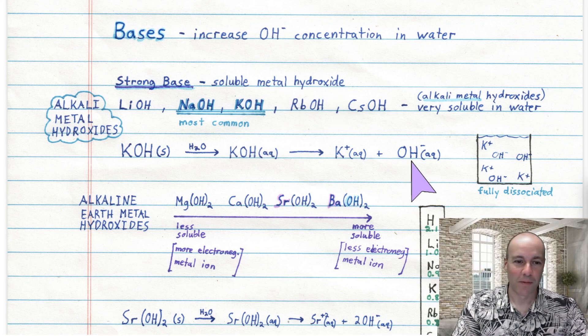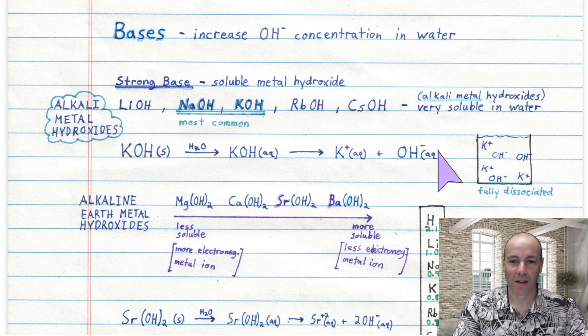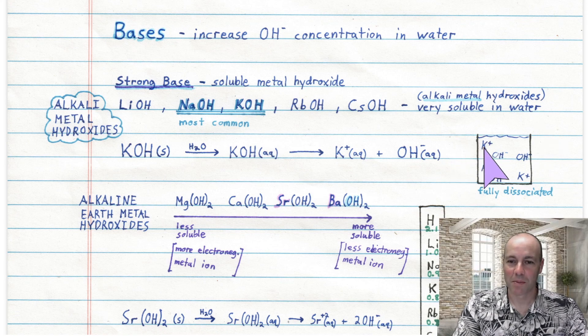If you want to visualize potassium hydroxide in solution, it will be fully dissociated — all of the potassium plus ions will be separated from the hydroxide minus ions.